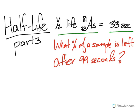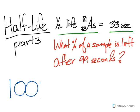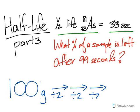Now to do this problem, you have to start out with the starting mass as 100%. In fact, let's get rid of the percent and just put grams. What we're going to do is keep dividing this by 2 until we have 99 seconds of time elapsed. From the previous problems, you note that if we divide this by 2, and we divide this by 2, and we divide this by 2 again, for each one of those arrows, that's 33 seconds.